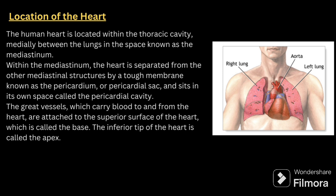Regarding the location of the heart — the human heart is located within the thoracic cavity, medially between the lungs, in the space known as the mediastinum. Within the mediastinum, the heart is separated from other structures by a tough membrane known as the pericardium or pericardial sac, and sits in its own space called the pericardial cavity. The great vessels attach to the superior surface, called the base, and the inferior tip is called the apex.